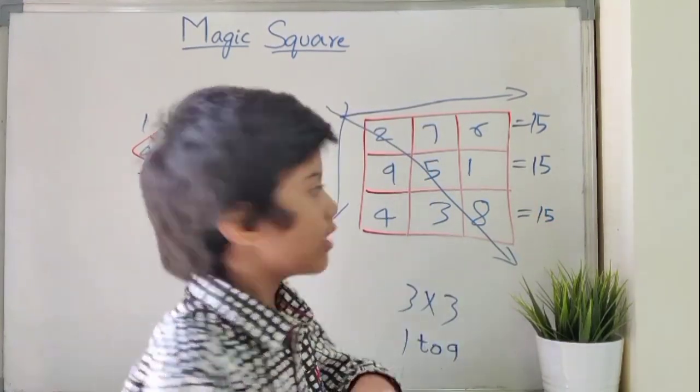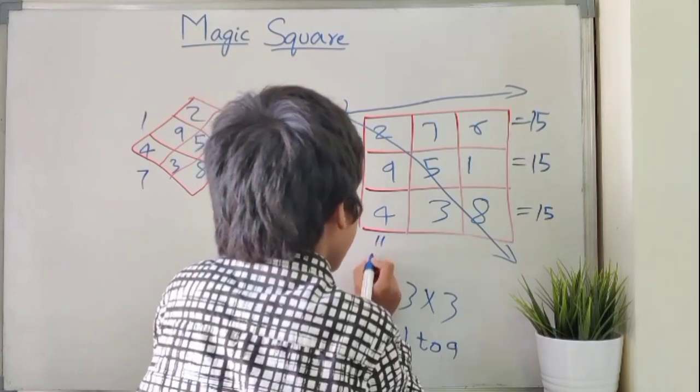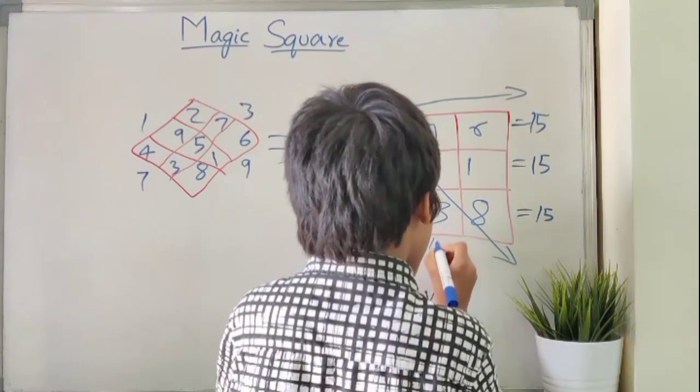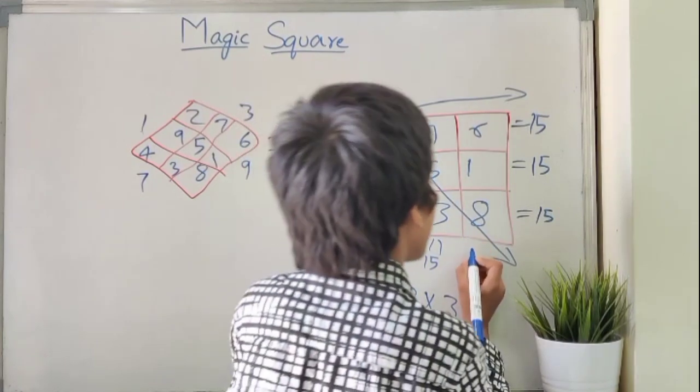Now let's calculate the columns. 9 plus 2 is 11, 11 plus 4 is 15. 5 plus 3 is 8, 8 plus 7 is 15. 8 plus 1 is 9, 9 plus 6 is 15.